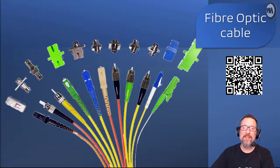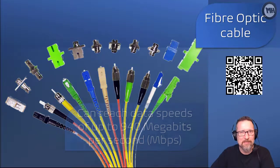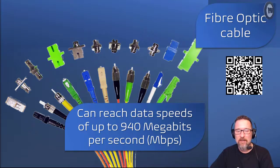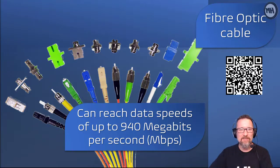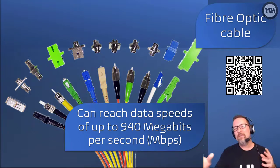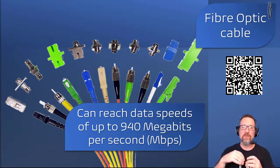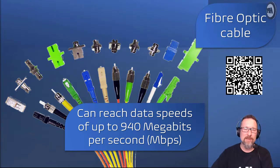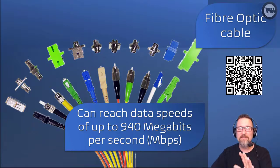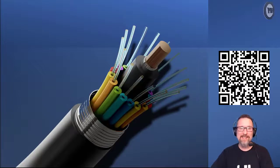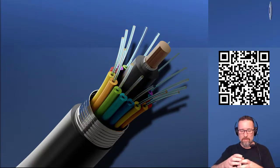Right — fiber optic cables. Everyone's talking about fiber, and of course it's because fiber is very fast. In terms of data speeds, fiber can reach speeds of up to 940 megabits per second. Actual fiber optics obviously transfer at much higher rates because it's transferring light pulses — essentially the speed of light. There's an example of a typical pipe full of different fiber optic cables, and there's what an individual cable looks like.